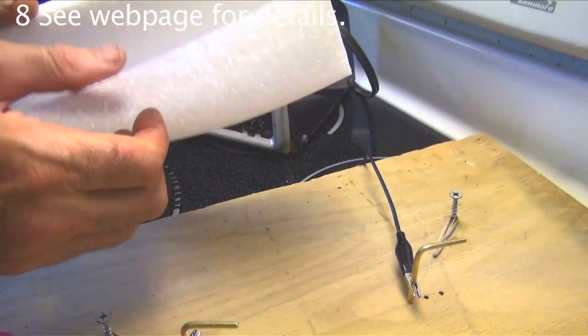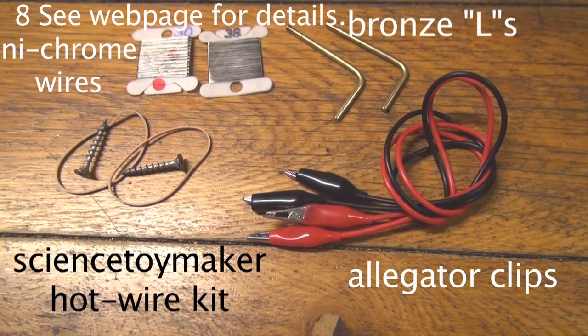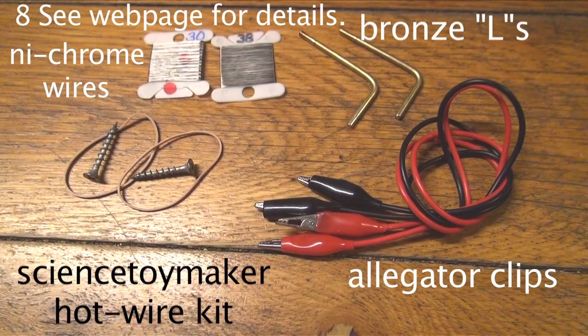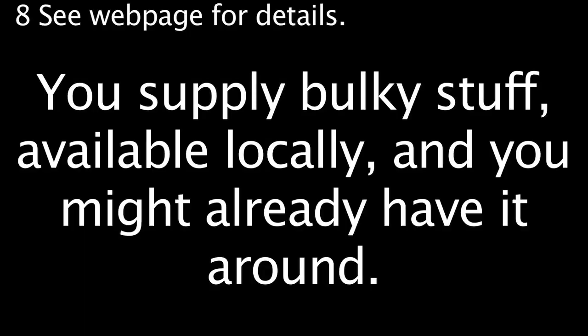The kit supplies several difficult to find items including nichrome wires, bronze threaded and machined parts that enable the precision, while you supply the bulky but easy to find locally things.